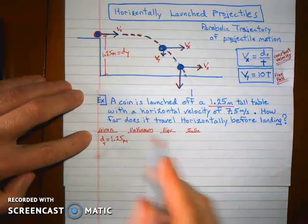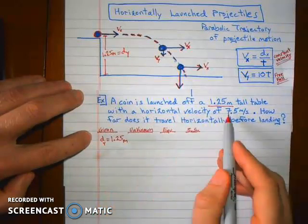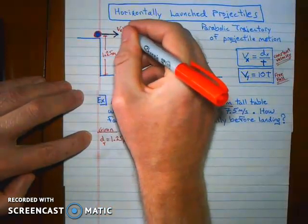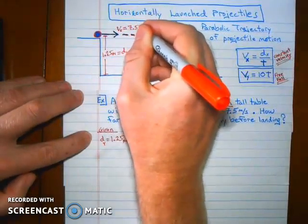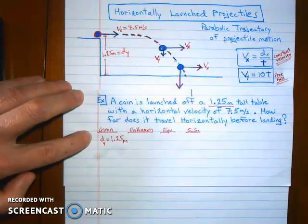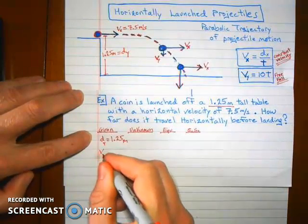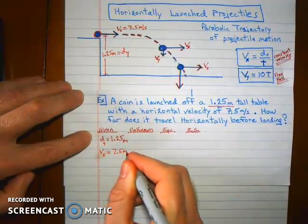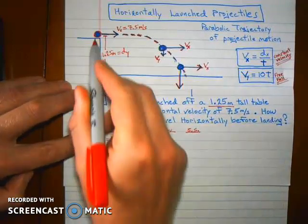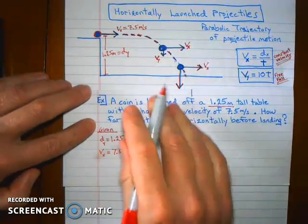You shoot it off the table and it has an initial horizontal velocity of 7.5 meters per second. So that's the vx. That's the velocity in the x direction, 7.5 meters per second. So let's just write that down as our given. So we have two bits of given. And the question is, can we hit a target down here?